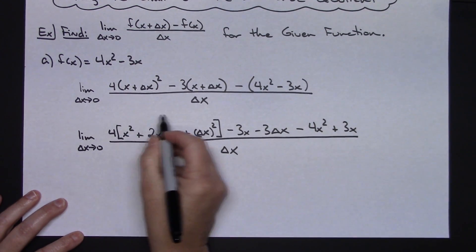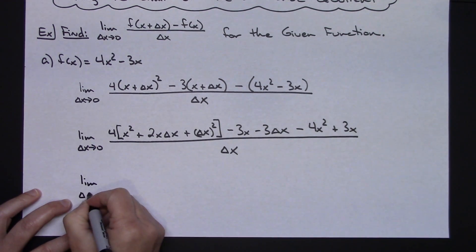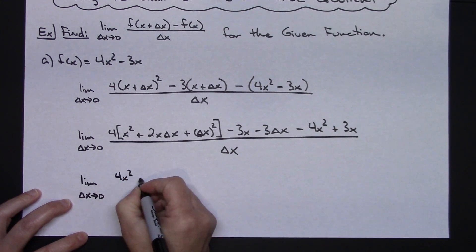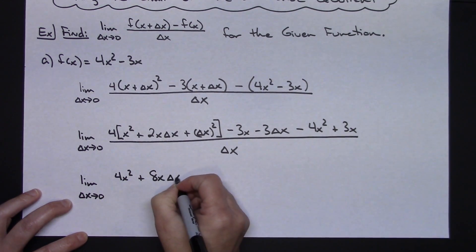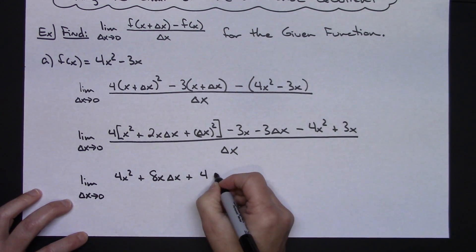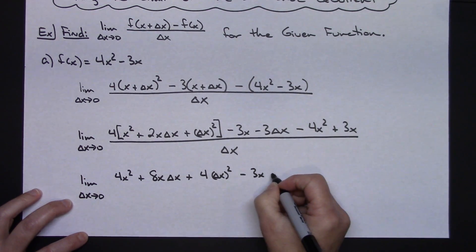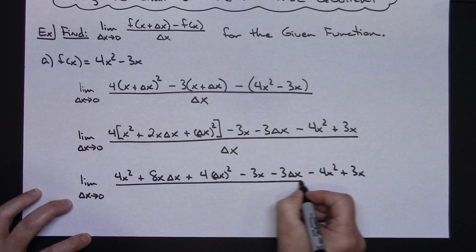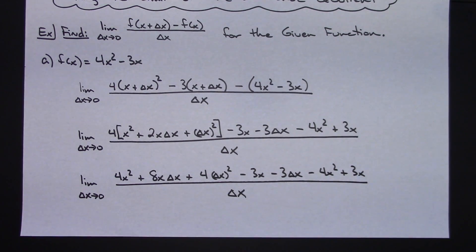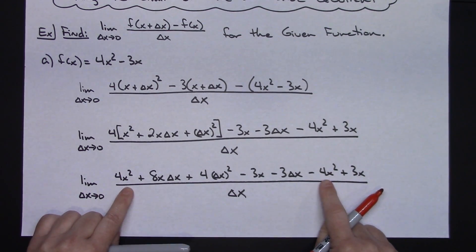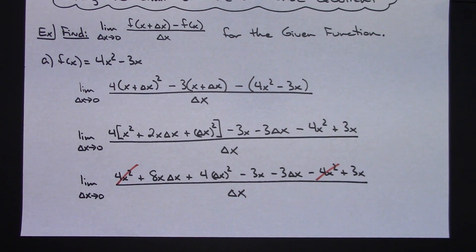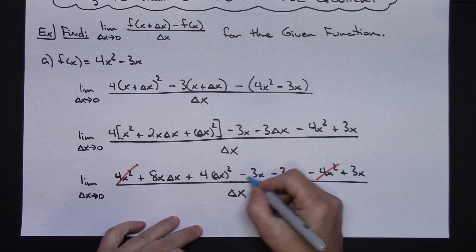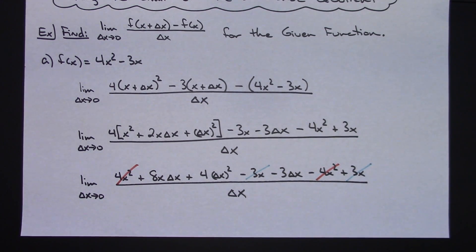Distributing the 4, I'll have the limit as delta x approaches 0 of 4x² + 8x·delta x + 4·(delta x)² - 3x - 3·delta x - 4x² + 3x, all over delta x. At this point, if you've done the arithmetic right, lots of terms fall out: the positive 4x² and negative 4x² cancel, and the 3x and minus 3x cancel.